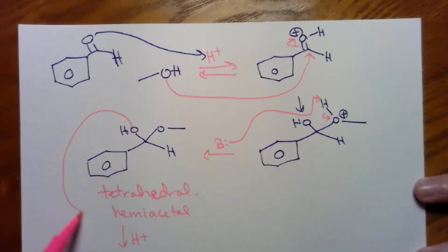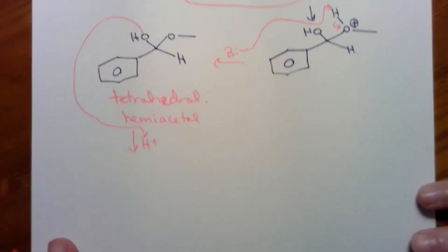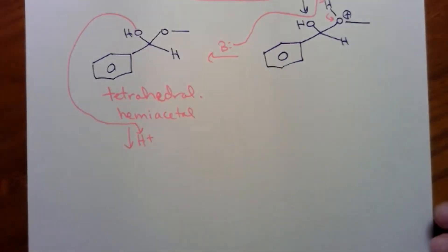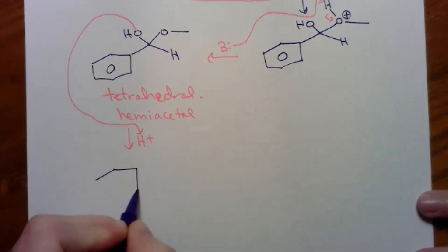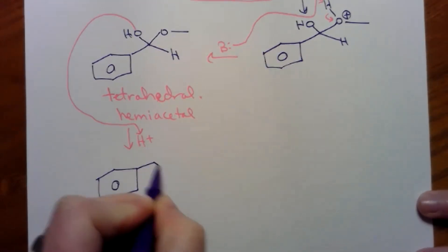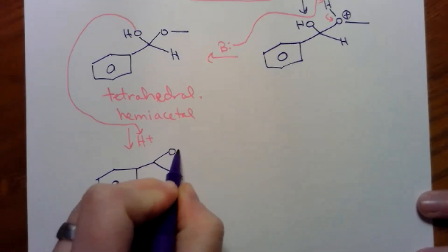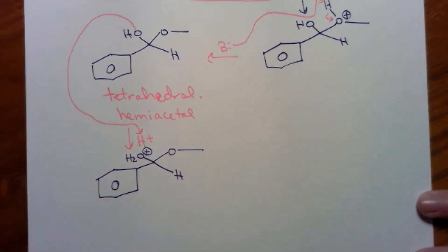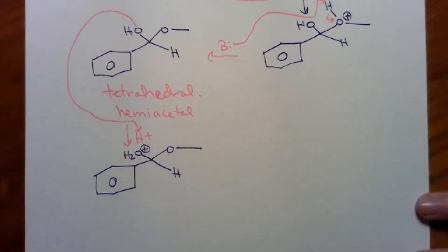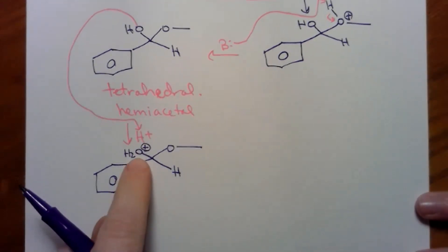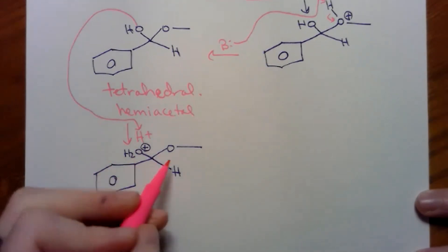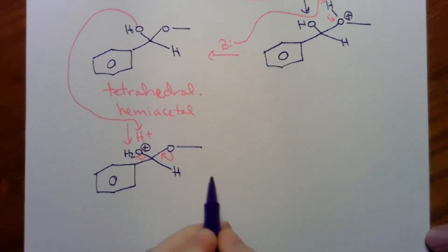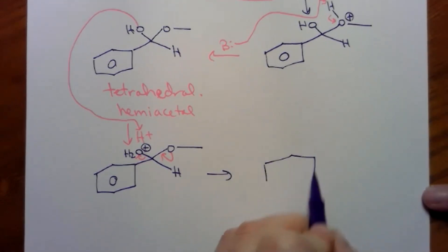You protonate the OH of your hemiacetal to keep going. This version is not going to make a half acetal. It's going to make a full acetal. A legit, total acetal. So you protonate your OH so that you can fold down and kick it out. Could you see that coming? I hope so.